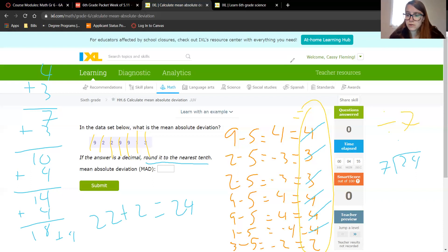7 goes into 2, 0 times. Bring it down. 7 goes into 24, 3 times. 7 times 3 is 21. 4 minus 1 is 3, 2 minus 2 is 0. We now have a decimal. We bring an imaginary 0. 7 goes into 30, 4 times because 5 would be too many. We have to borrow. 10 minus 8 is 2. Bring down a 0. 7 goes into 20, that would be 2 times.